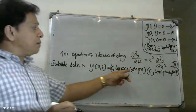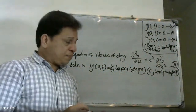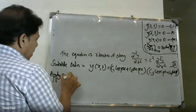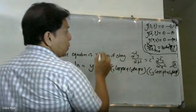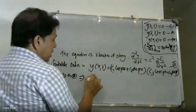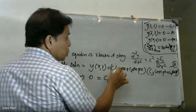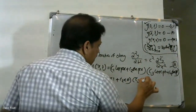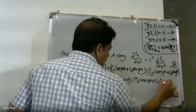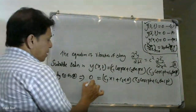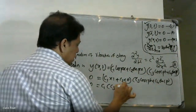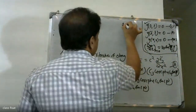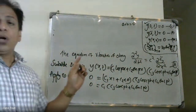Applying the boundary conditions one by one. Applying the first condition: y(0,t) = 0. On the right-hand side, we get c1·cos(0) + c2·sin(0) multiplied by (c3·cos(0) + c4·sin(0)). So 0 = c1·(c3·cos(pt) + c4·sin(pt)), meaning either c1 = 0 or the bracket equals 0.